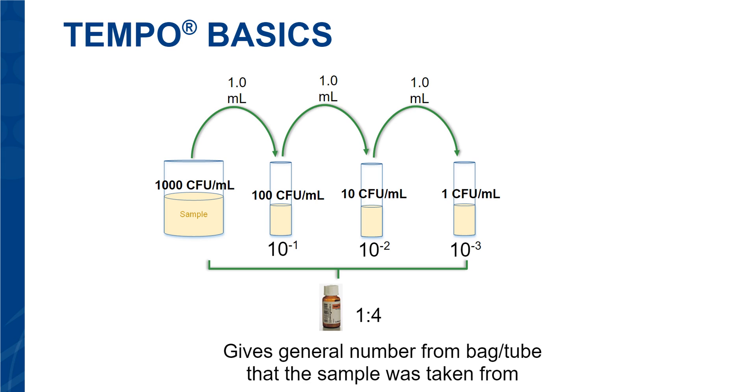If you want to know what the concentration of the original sample from the third tube, we would have to tell the tempo that we have done three successful 1 to 10 dilutions. We will look at that next.